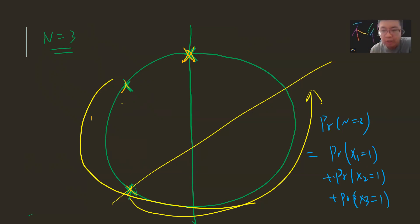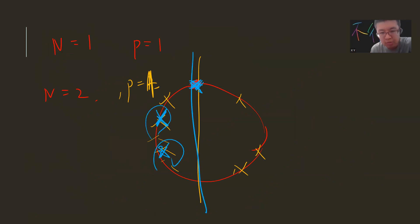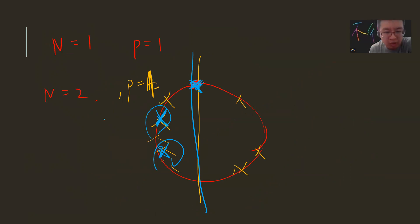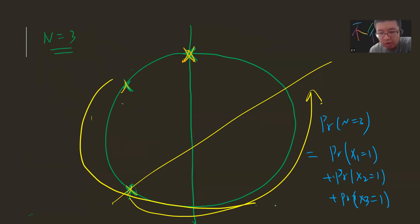For x1 to be 1, it's very simple. I fixed one point, and I ask: what is the probability that the other two points come from the left-hand side? It's 1/2 squared, because each of the two remaining points has a 1/2 chance of falling in the semicircle. So the answer for n equal to 3 is 3 times 1/4, which equals 3/4.